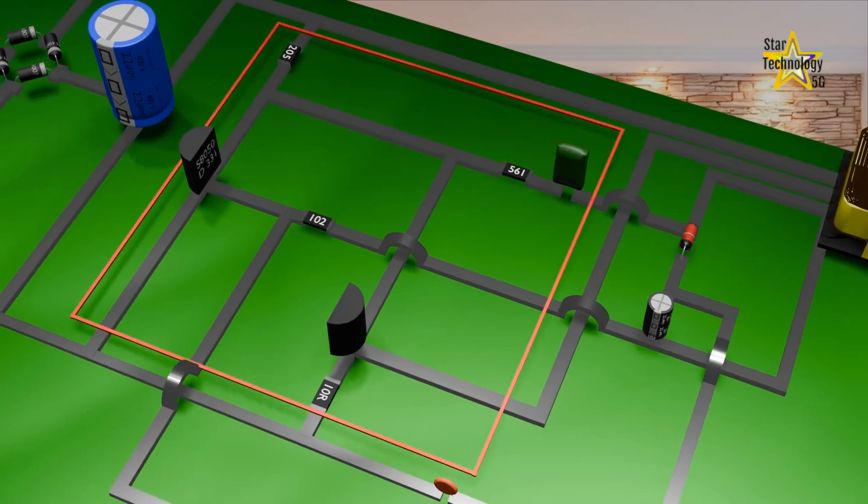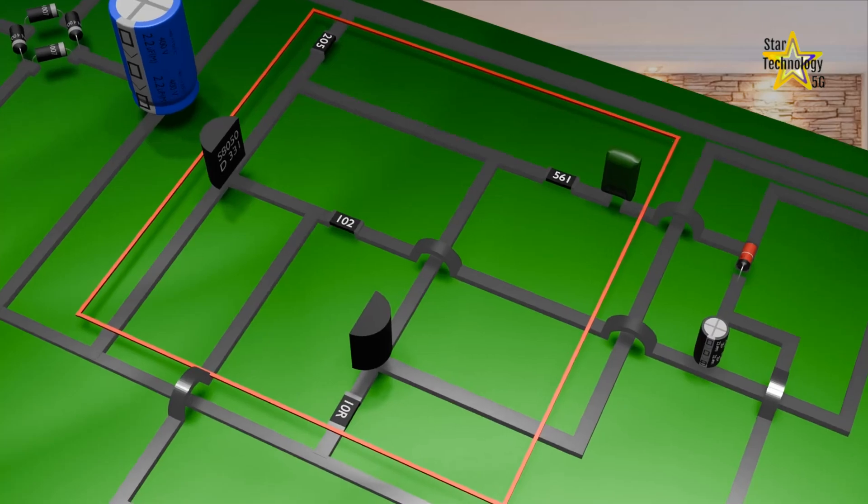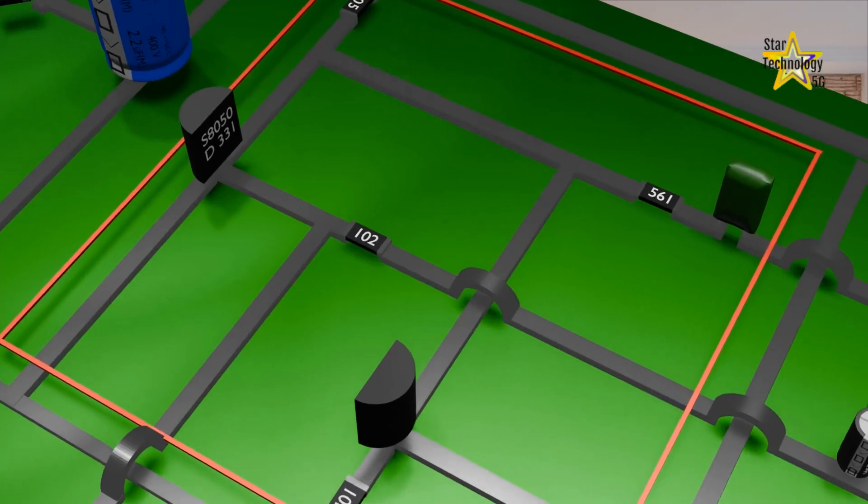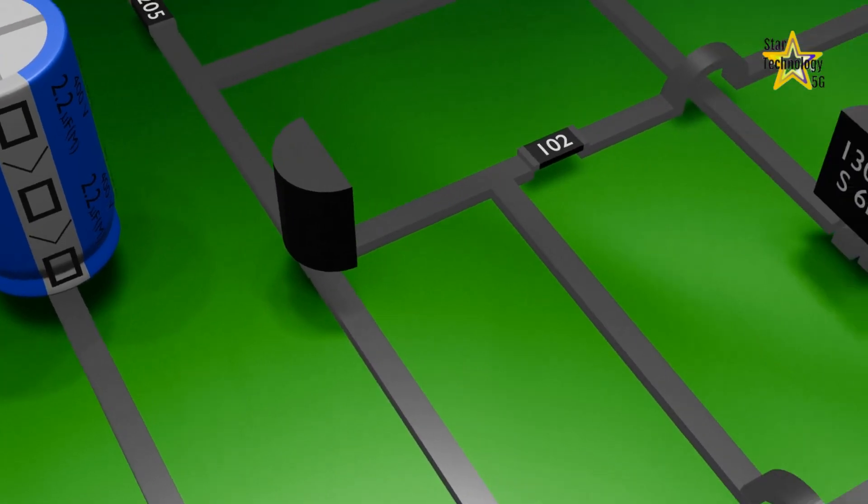This is an oscillator circuit. This circuit converts DC back to high-frequency AC of 15 to 50 kHz. These are two transistors, S8050 and 13001.